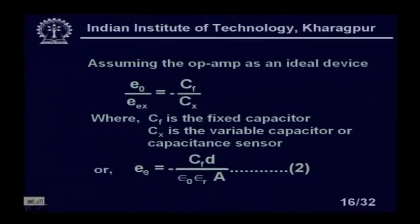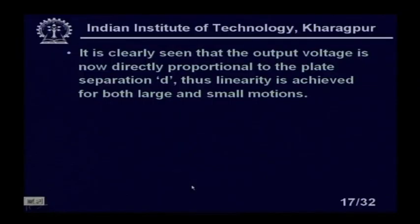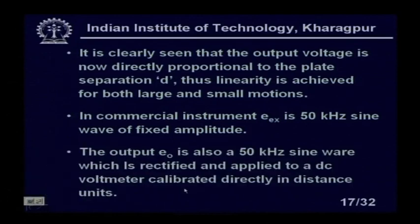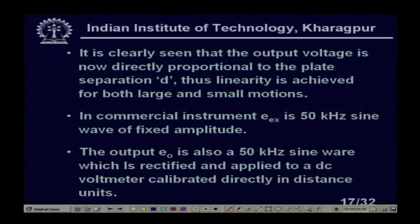The output voltage is now directly proportional to the plate separation D, so linearity is achieved for both large and small motions. In commercial instruments, the excitation Eₓ is a 50 kHz sine wave of fixed amplitude, and the output E₀ is also a 50 kHz sine wave.